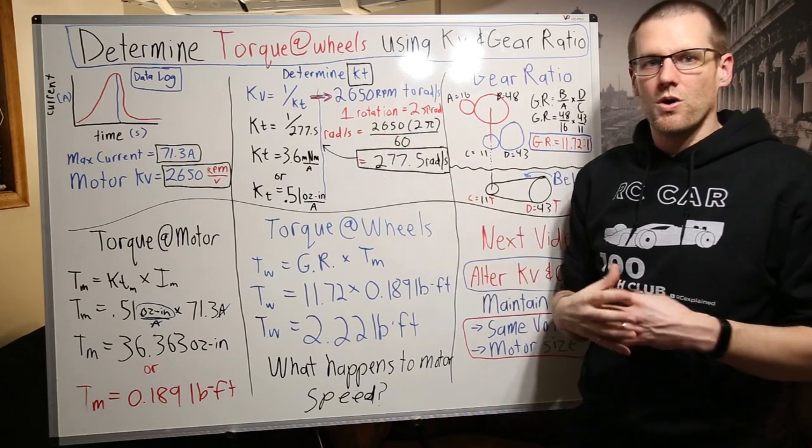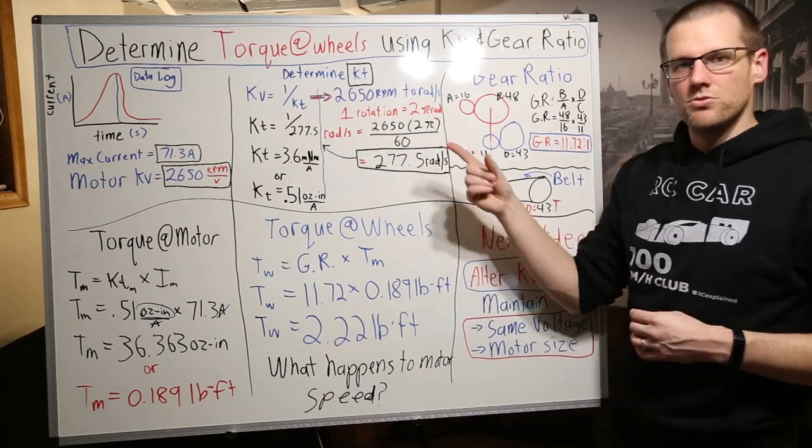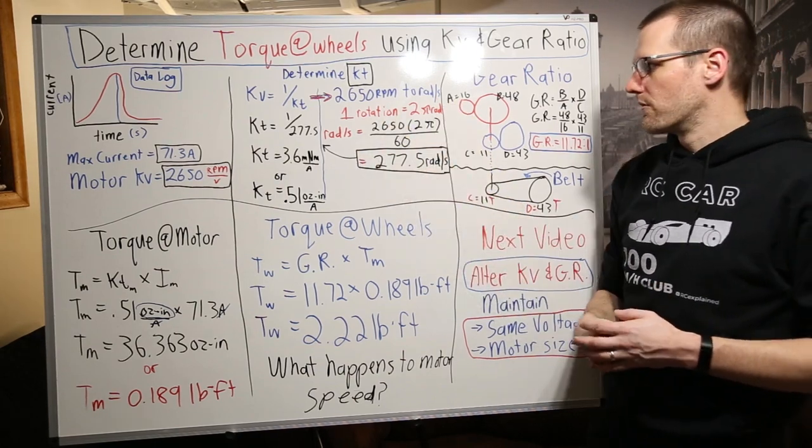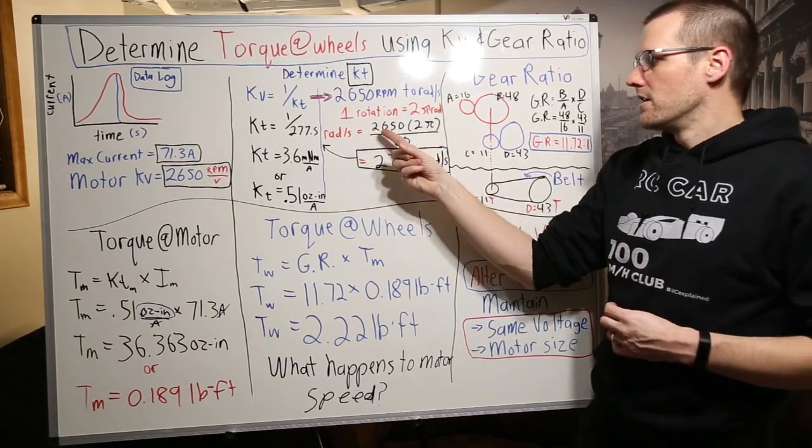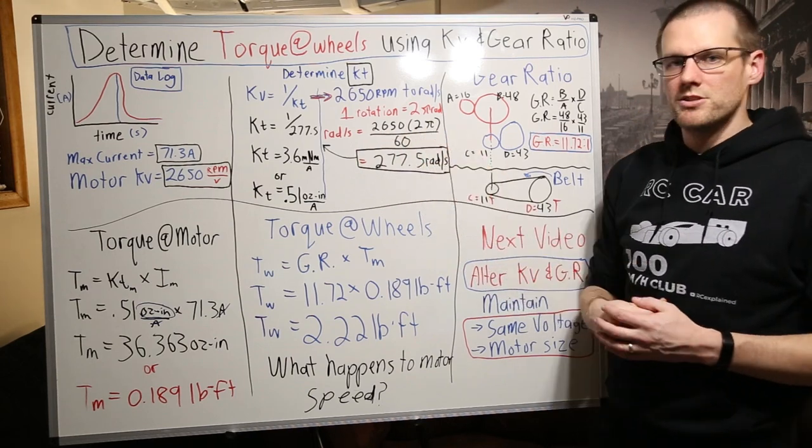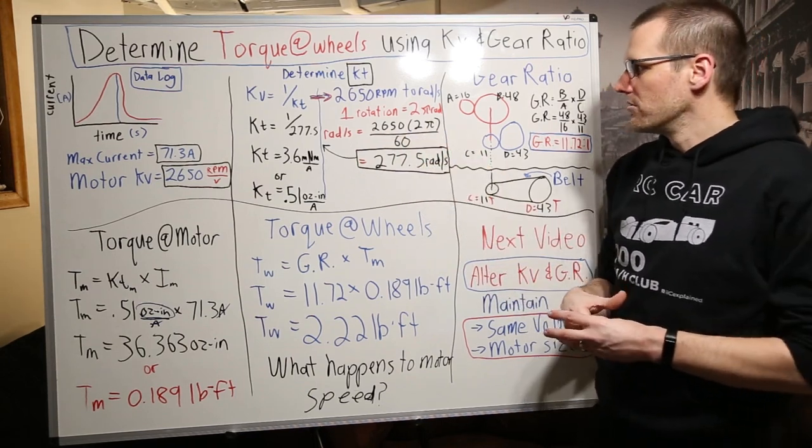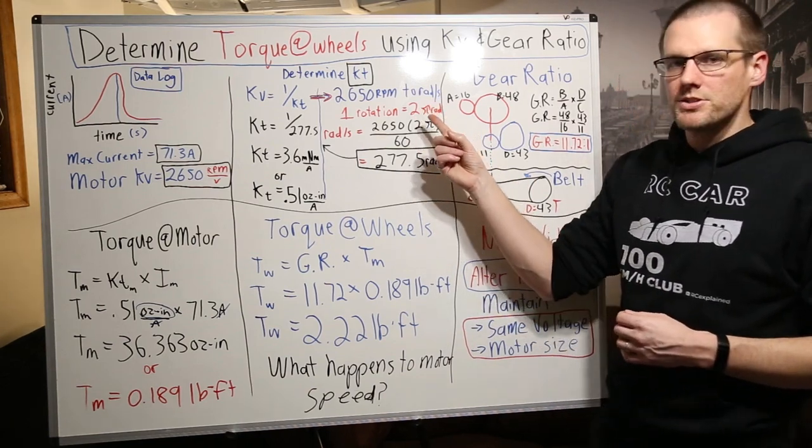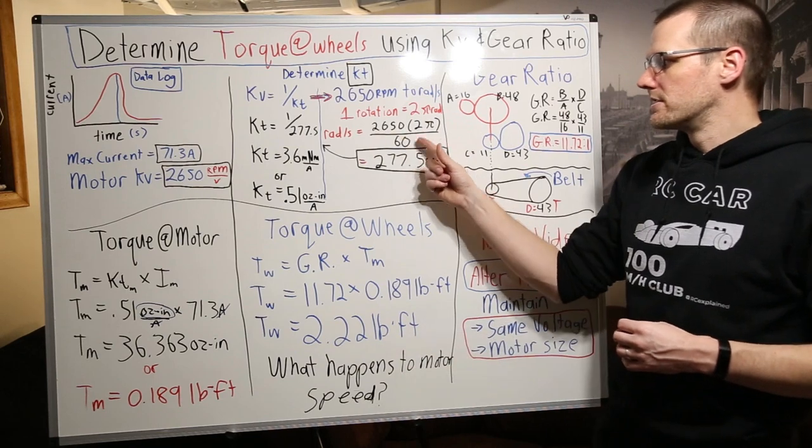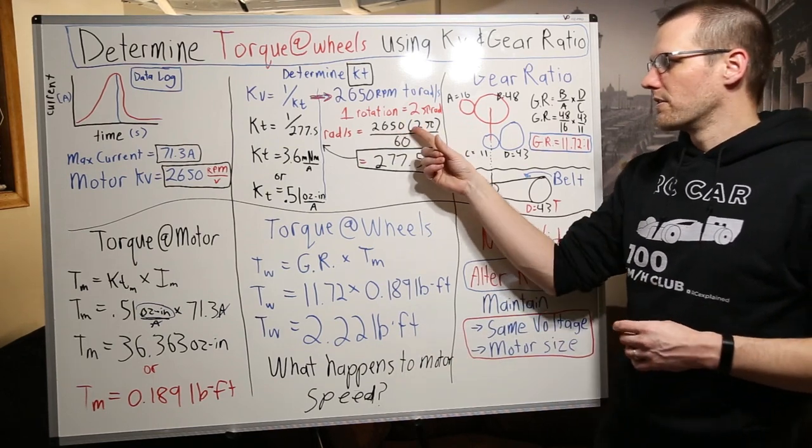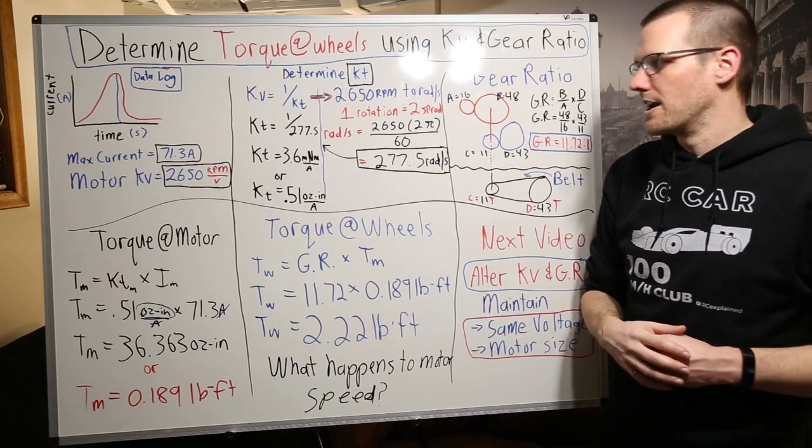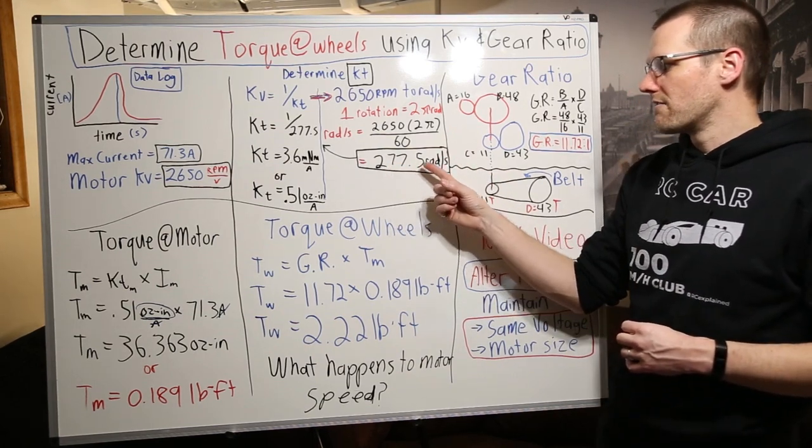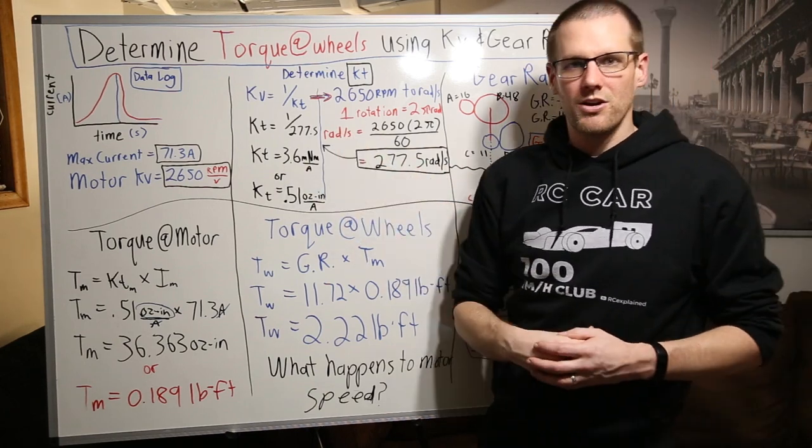So this is radians per second that we're trying to get. Well, one rotation or one revolution is equal to 2π rad. So that's how we're able to determine and convert this over. We go ahead and take our 2650, multiply it by 2π and we get a value that we're able to convert based off of going from minutes to seconds. That's why we see this 60 here. So we take 2650 multiply by 2π and then we divide that by 60 and that gets us the radians per second. This is equal to 277.5 rad per second. We throw that into our equation.